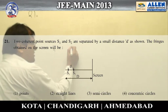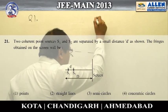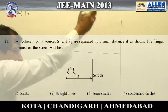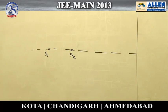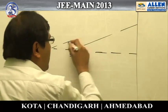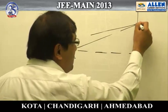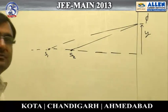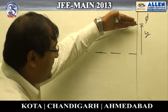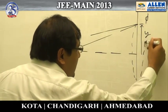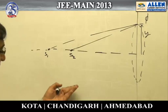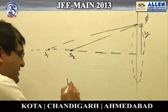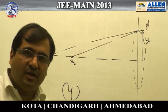Question number 21: we can see that there are two sources and it is not a standard Young's double slit arrangement because they are not parallel to the screen. They are asking about the shape of the fringes. If you take a particular point on the screen at some height Y, there will be some particular phase difference. Moving in an imaginary circle keeping the same distance Y, the same phase difference exists all along, which means the shape of the fringes is concentric circles — option 4 is correct.